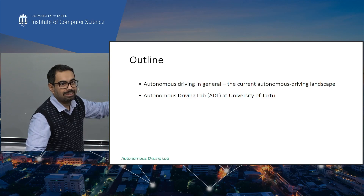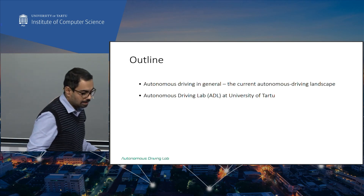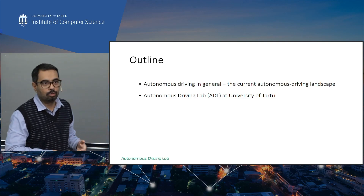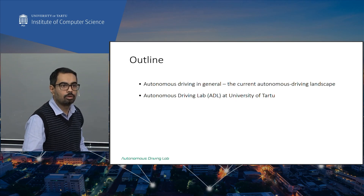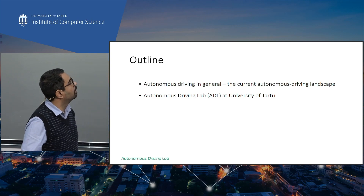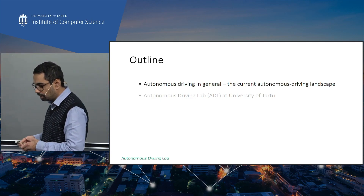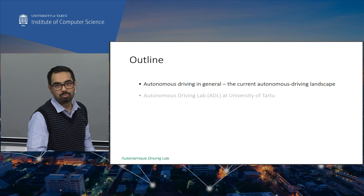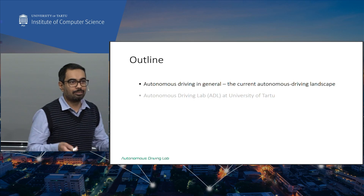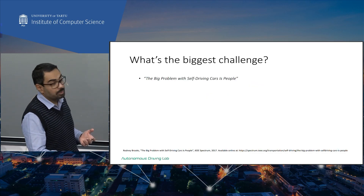I've titled the presentation 'Developments and Challenges,' but the structure is not all challenges then all developments. I'll talk about two aspects: first, the general autonomous driving landscape in the world — the current state — and then what we are doing here at the Autonomous Driving Lab. Driving from point A to point B without human intervention seems very simple, so why don't we have autonomous cars all around us?